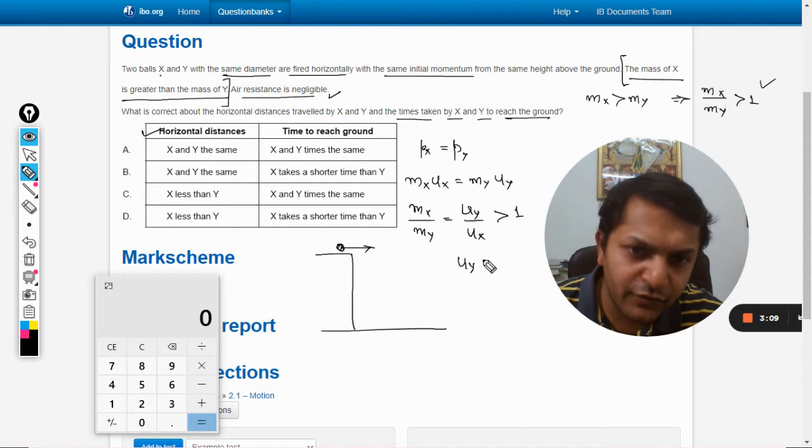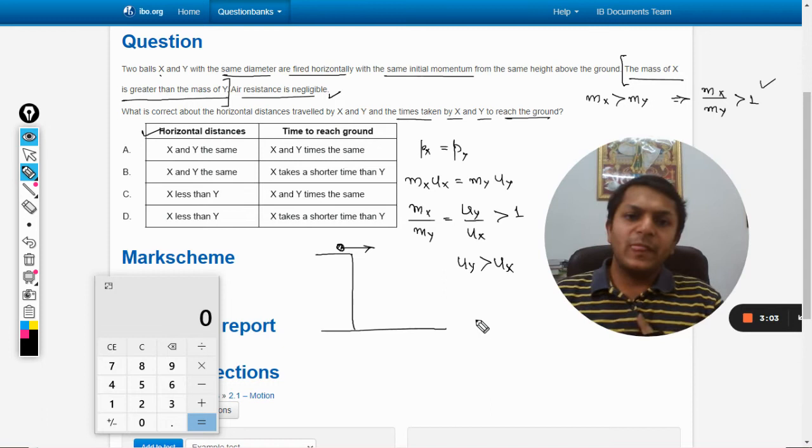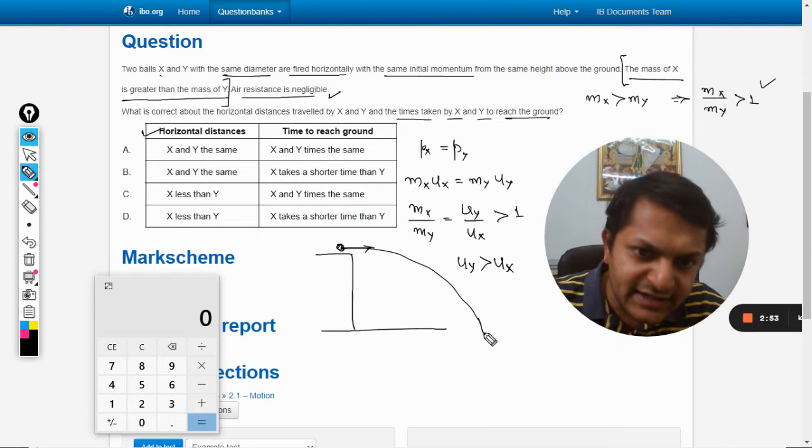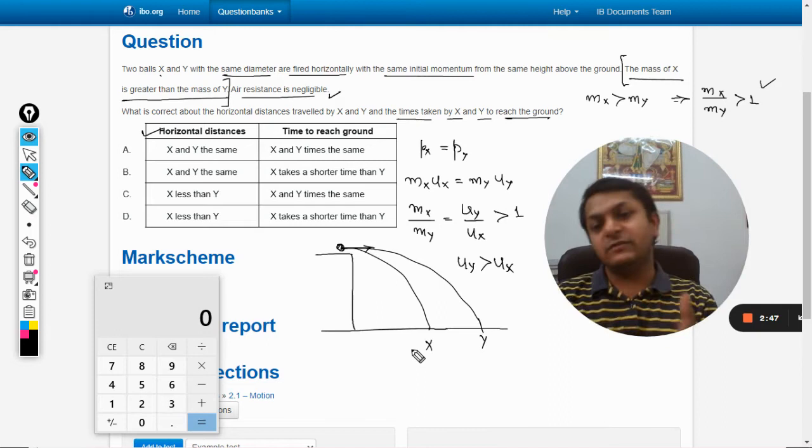As it can be seen from that point, we find that the velocity of Y is greater than velocity of X. So obviously it means that if the body is thrown with a higher velocity in a horizontal manner, it will reach to the farther distance.